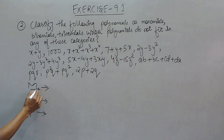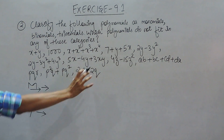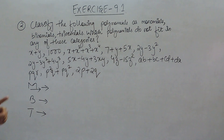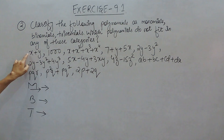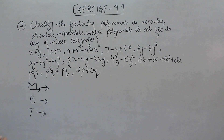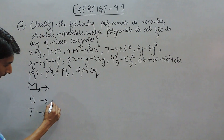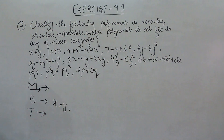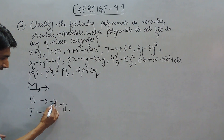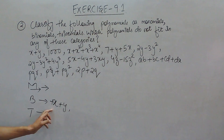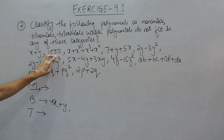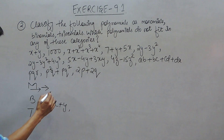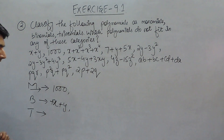So let's find the number of monomials in these expressions. Monomial means having only one term. In the first expression, there are two signs, so this should come in the category of binomial, because binomial is an expression having two terms. Here, if nothing is written before a term, it can be considered as positive. The second one has only one term, so this should be monomial.